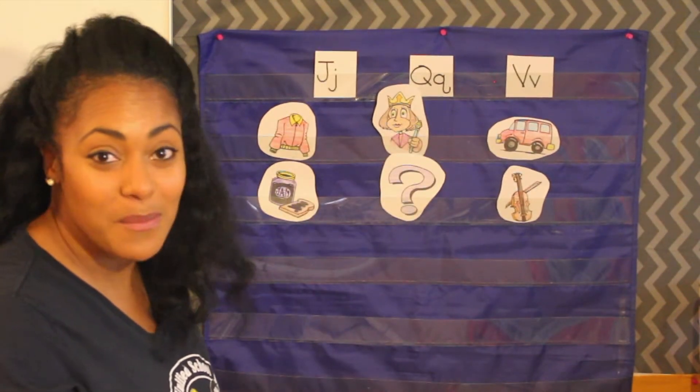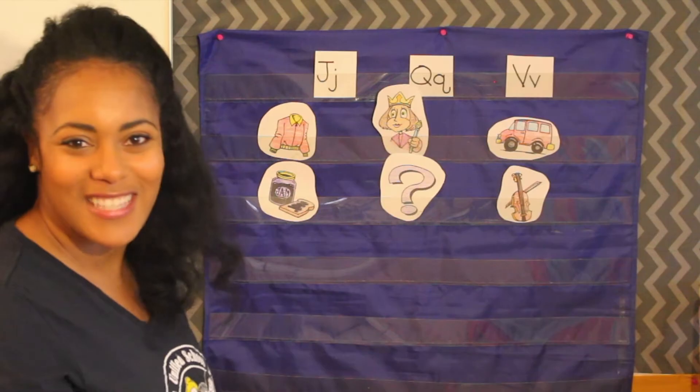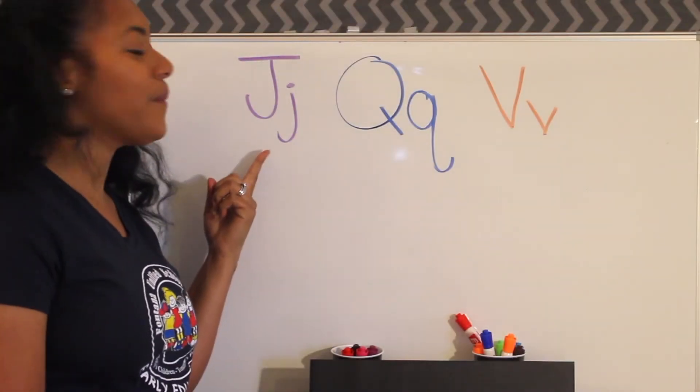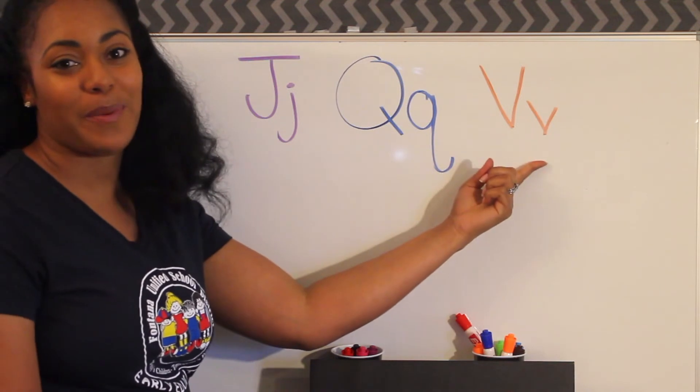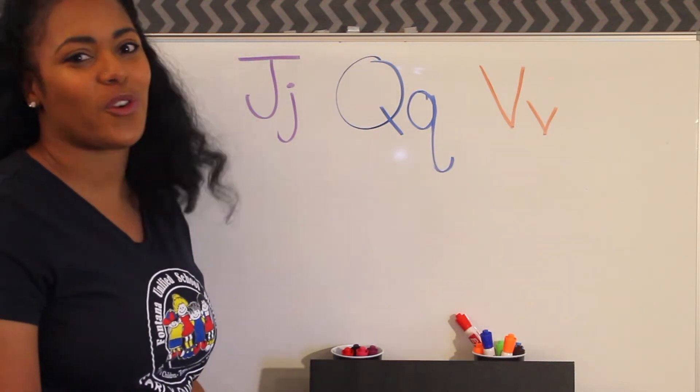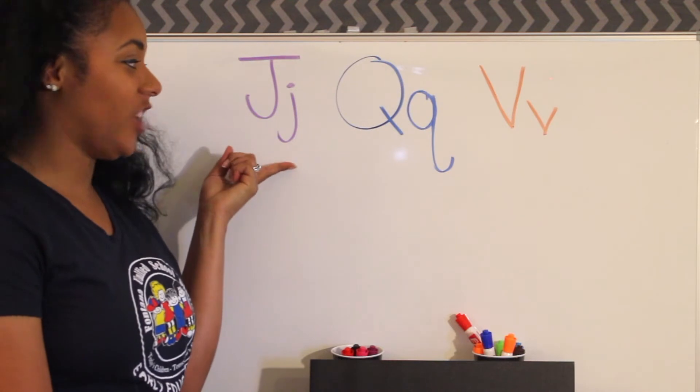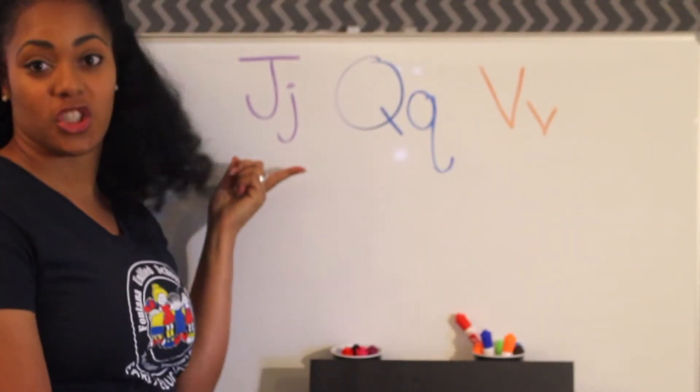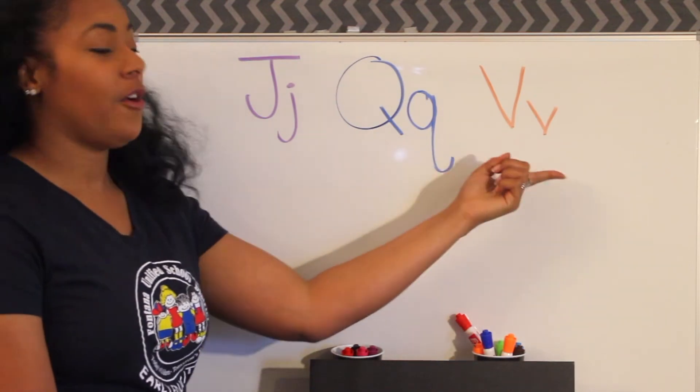Now let's practice drawing some more things that begin with these letter sounds. Go ahead and get a piece of paper out and write these three letters at the top of your page and grab something to color or draw with. Again we're working with the letter J, Q, and V. And those sounds are J, Q, V.